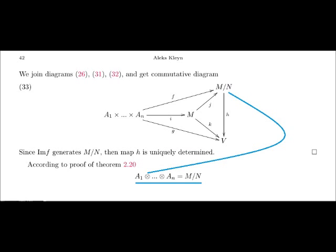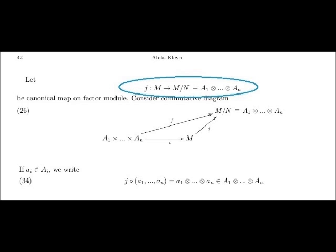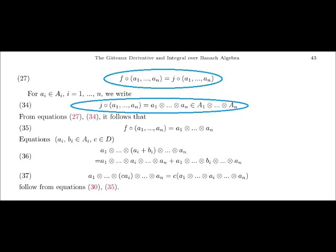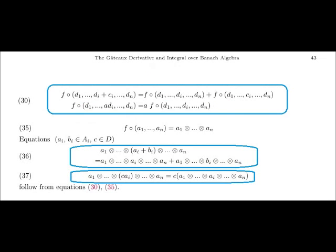Since the image of map F generates the factor-module of D-module M by D-module N, map H is uniquely determined. We finish the proof of theorem 20. According to the proof of this theorem, the factor-module of D-module M by D-module N is the tensor product of the algebras A1, ..., AN. Now we return to diagram 26 and consider map J of the module M into the tensor product of the algebras A1, ..., AN. For any element (A1, ..., AN) of the algebras, the image under map J is the tensor product A1 ⊗ ... ⊗ AN. From equations 27 and 35, it follows that the image of the tuple (A1, ..., AN) under map F is also the tensor product A1 ⊗ ... ⊗ AN. Equations 36 and 37 follow from equations 30 and 35.